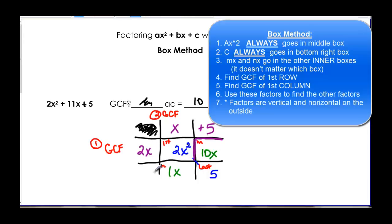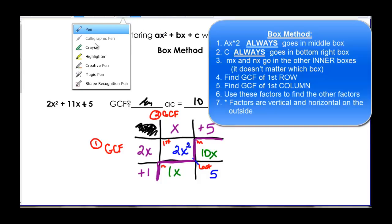We look here and say, this x is going this direction. What do I have to multiply to get to 1x? That will fill in my last box. And that would be a positive 1.